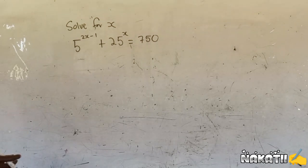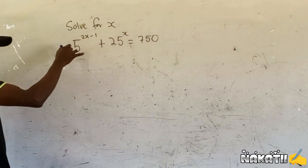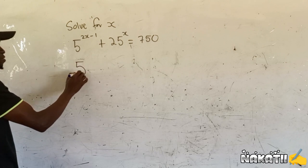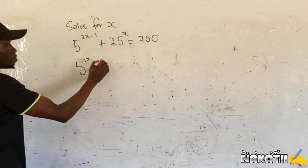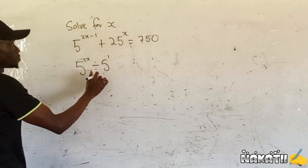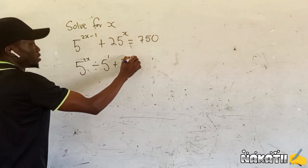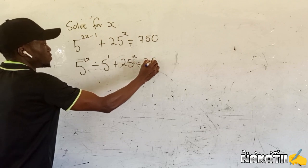So we can apply laws of indices here. Like this one here can be written as 5^x divided by 5^1 plus 25^x equals 750.